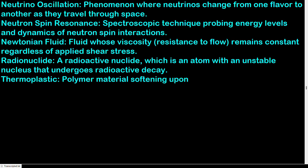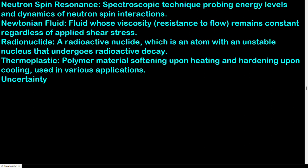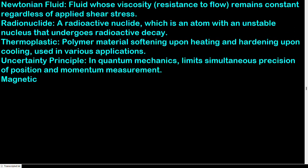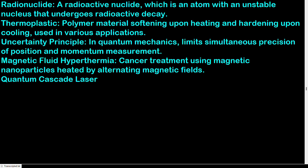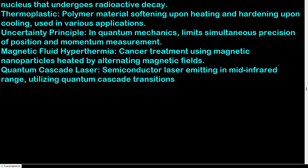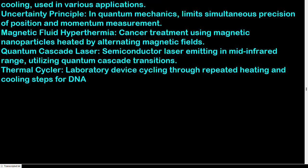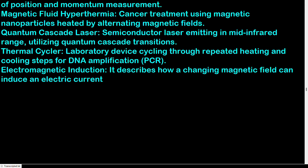Thermoplastic: polymer material softening upon heating and hardening upon cooling, used in various applications. Uncertainty principle: in quantum mechanics, limits simultaneous precision of position and momentum measurement. Magnetic fluid hyperthermia: cancer treatment using magnetic nanoparticles heated by alternating magnetic fields. Quantum cascade laser: semiconductor laser emitting in mid-infrared range, utilizing quantum cascade transitions. Thermal cycler: laboratory device cycling through repeated heating and cooling steps for DNA amplification (PCR). Electromagnetic induction: describes how a changing magnetic field can induce an electric current in a circuit.